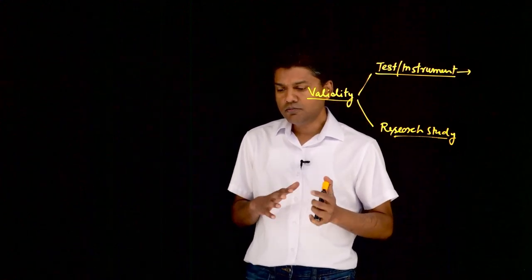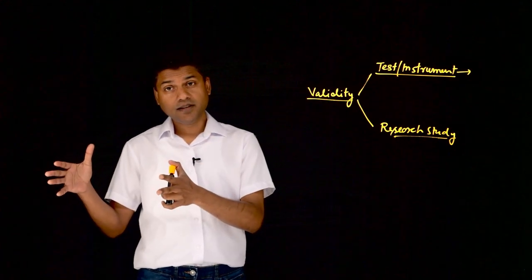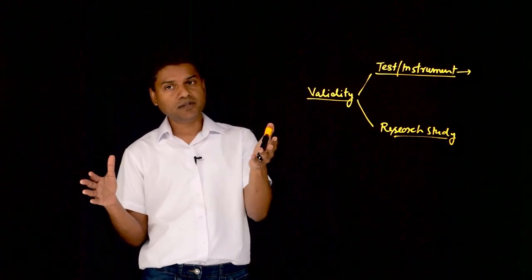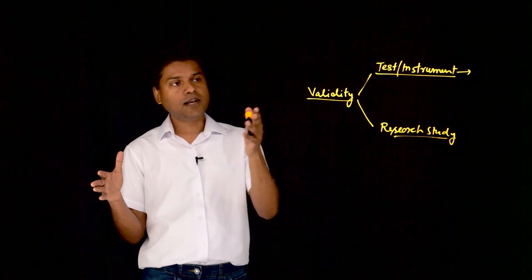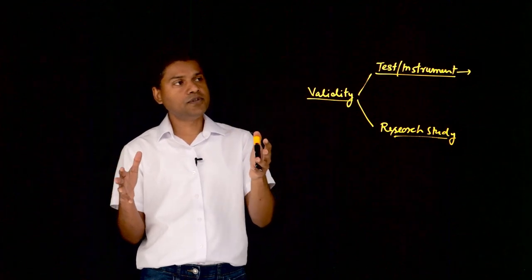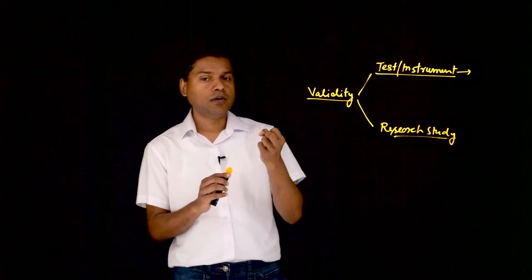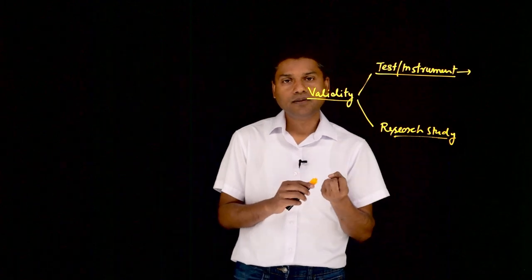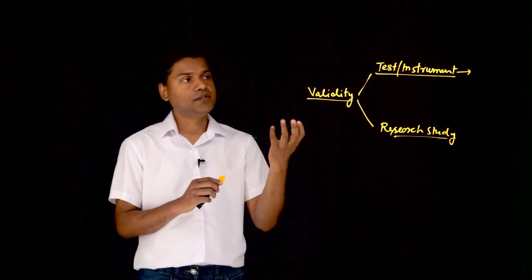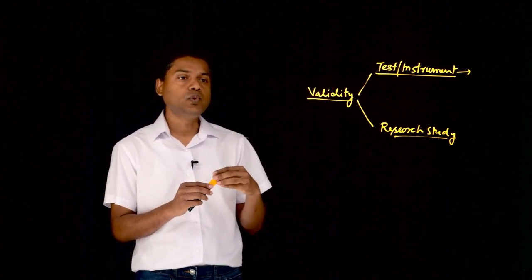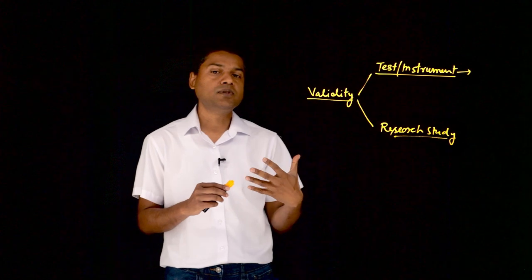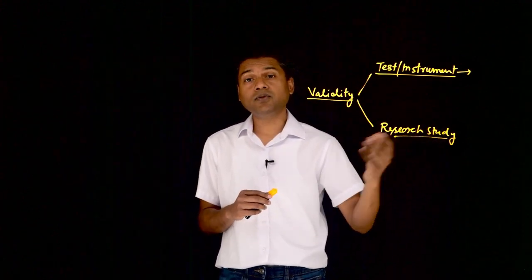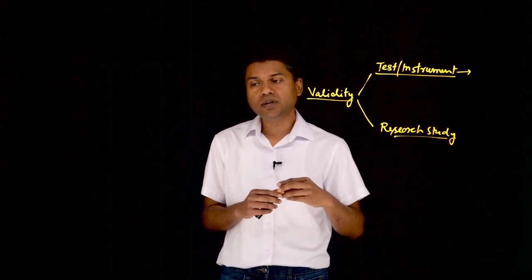So to summarize: reliability refers to the consistency of a measurement instrument, while validity refers to the actual claims — the construct that a test is measuring, or the actual claims and conclusions that a study is making — and how accurate those claims are.